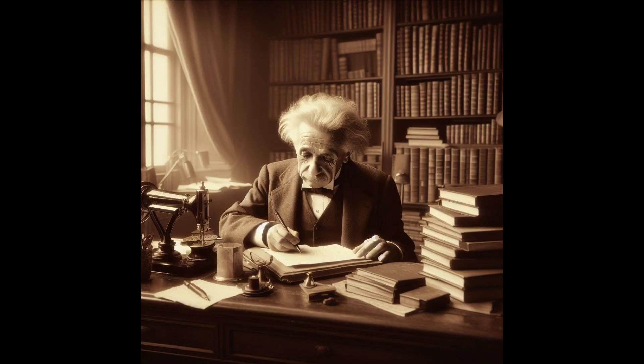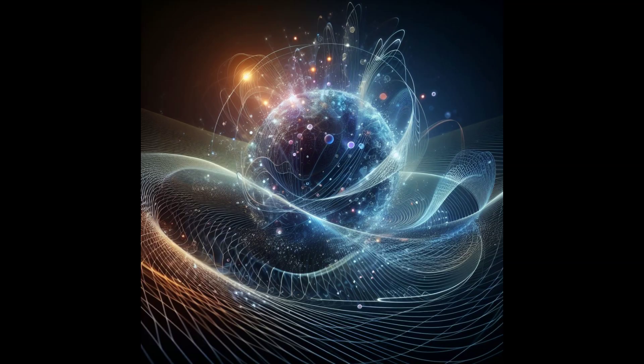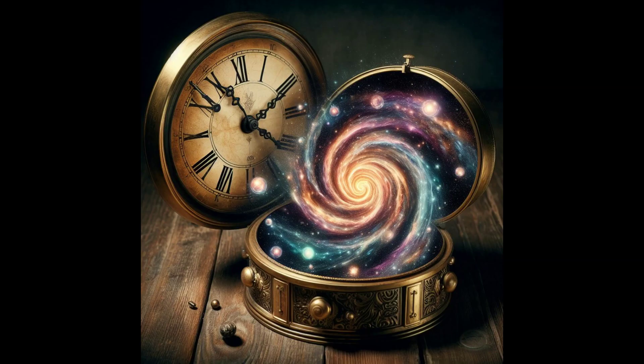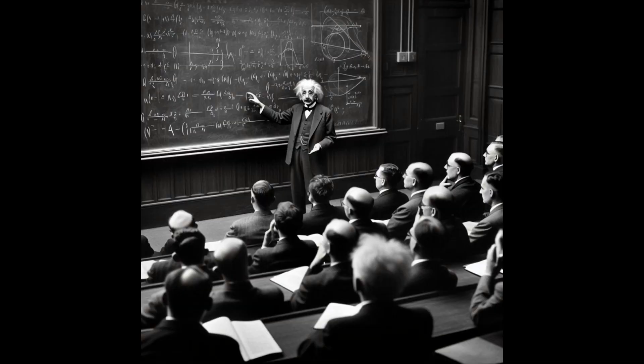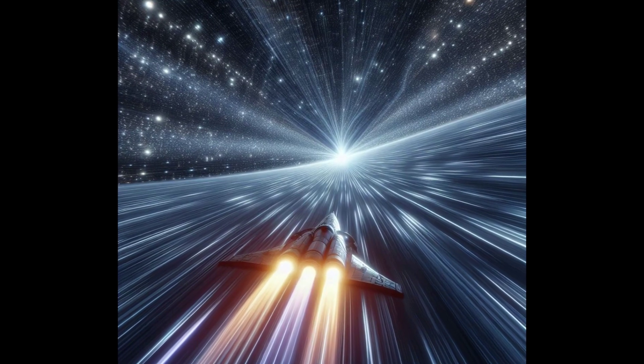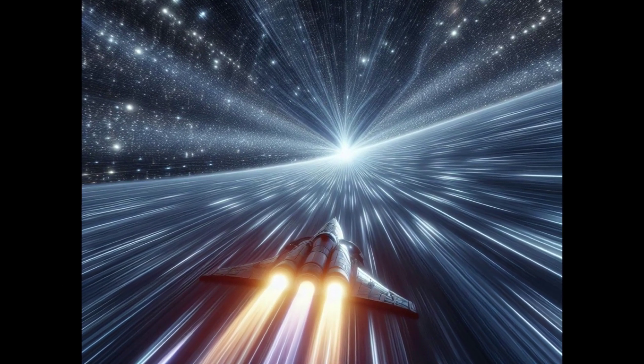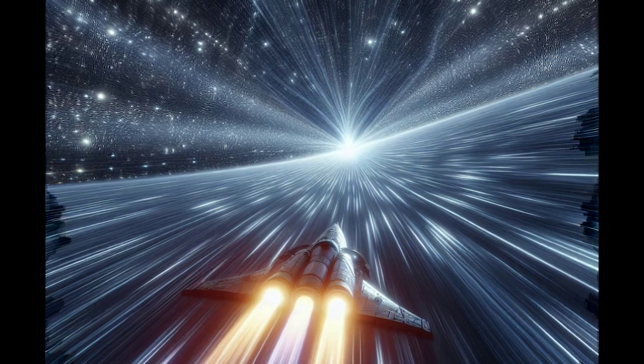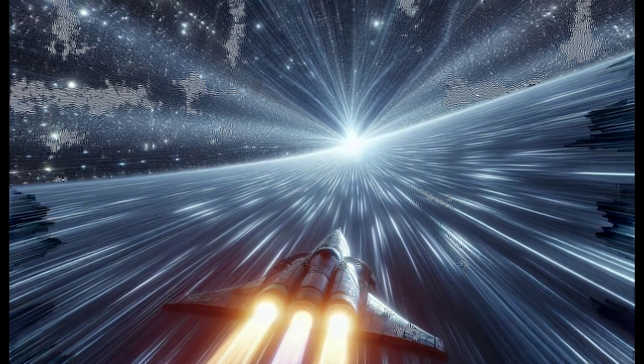The Miracle Year. In 1905, while working in a patent office, Einstein had what we call his miracle year. He published four groundbreaking papers that shook the foundations of physics. This was the year he introduced the world to the special theory of relativity with the famous equation, E equals mc squared. This equation tells us that energy, E, can be converted into mass, m, and vice versa, with c being the speed of light. Mind-blowing, right?